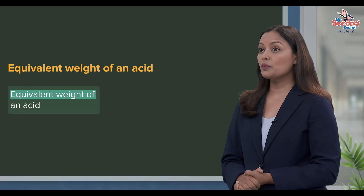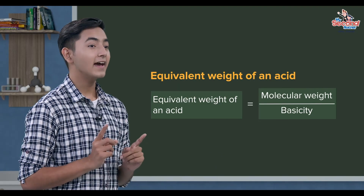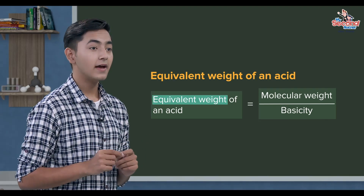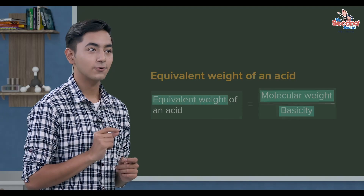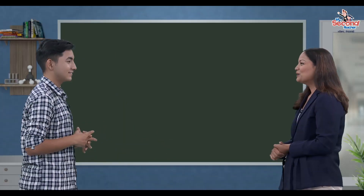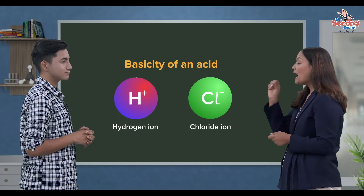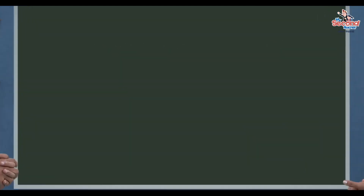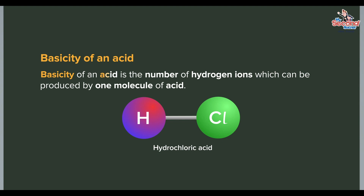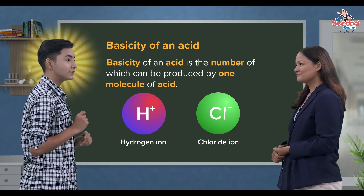Acid ko equivalent weight nikaalna, acid ko molecular weight lai, tyo acid ko basicity le divide koanno par sa. Acid ko basicity baunneko, tyo acid ko one molecule le produce karne hydrogen ions ko number ho. In other words, basicity of an acid is the number of hydrogen ions which can be produced by one molecule of acid.